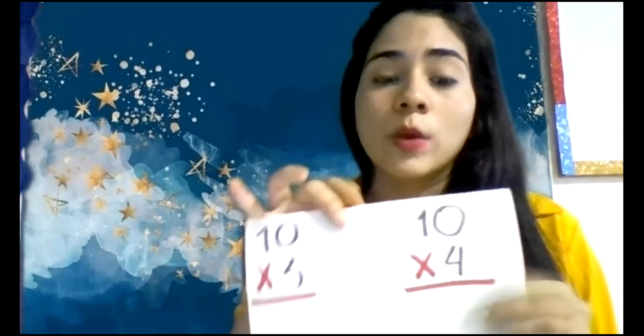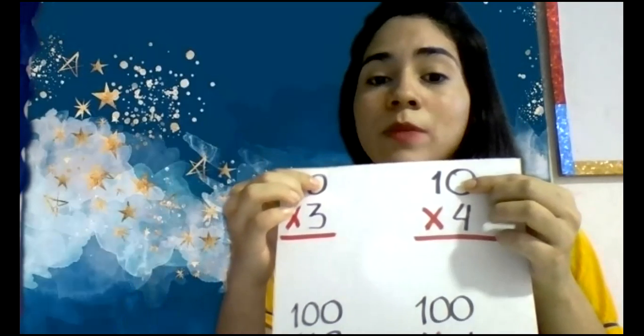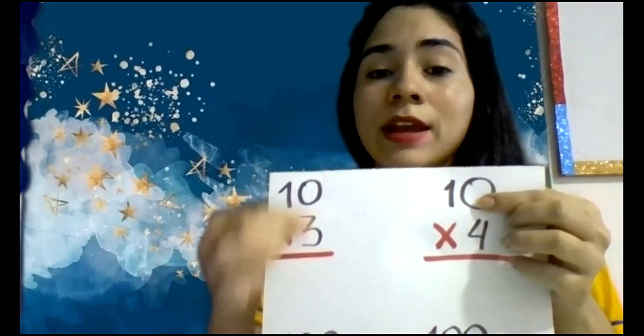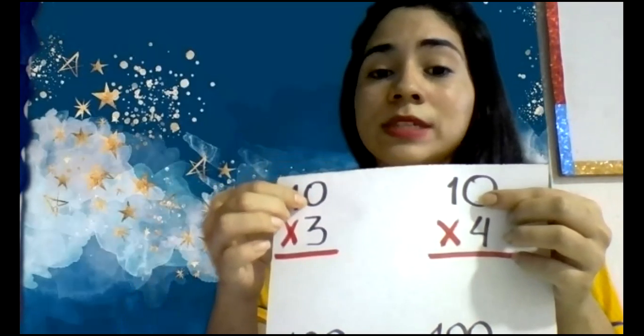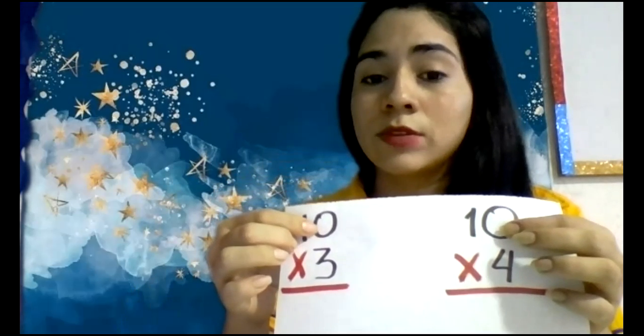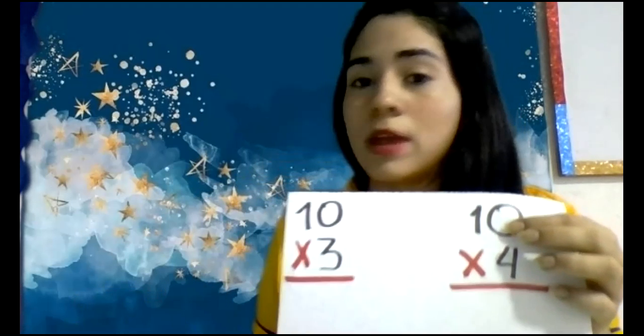So in the multiplication guys you have to know, you have to know that when there is a zero, when you multiply a number by zero, the result of multiplying a number with zero is equal to zero.